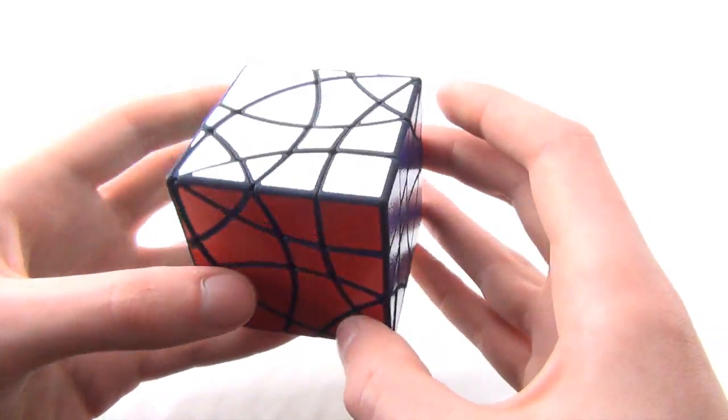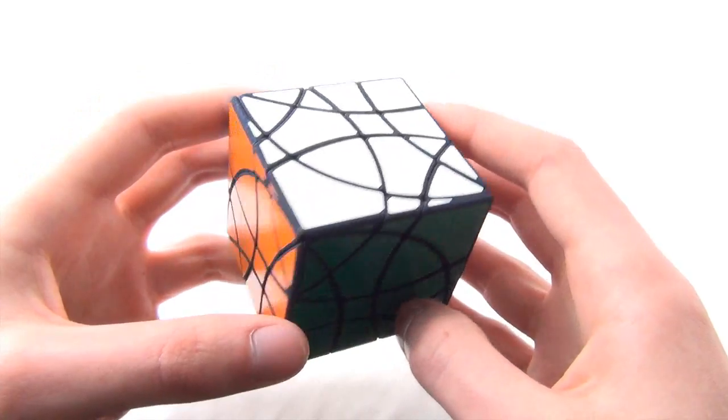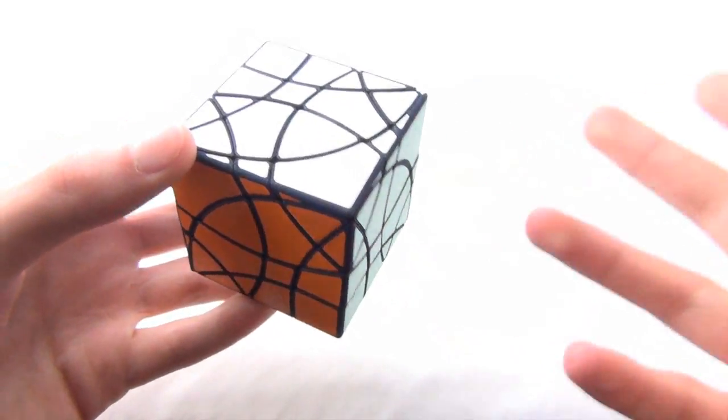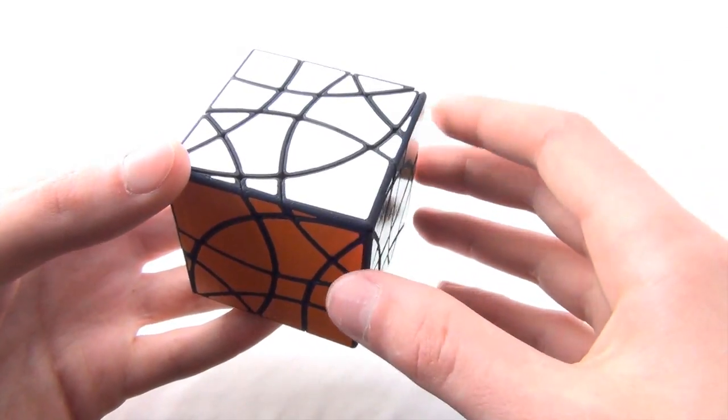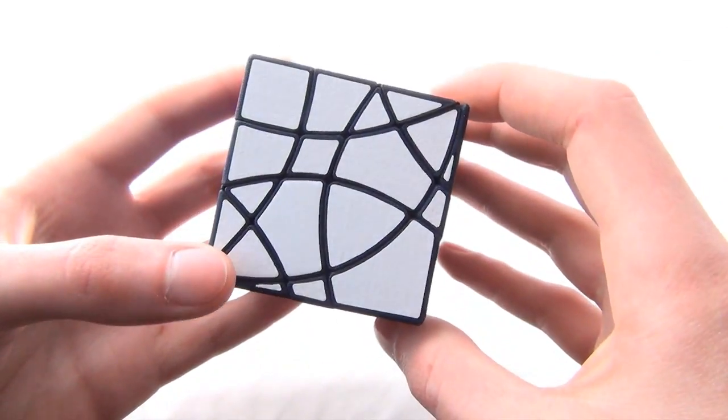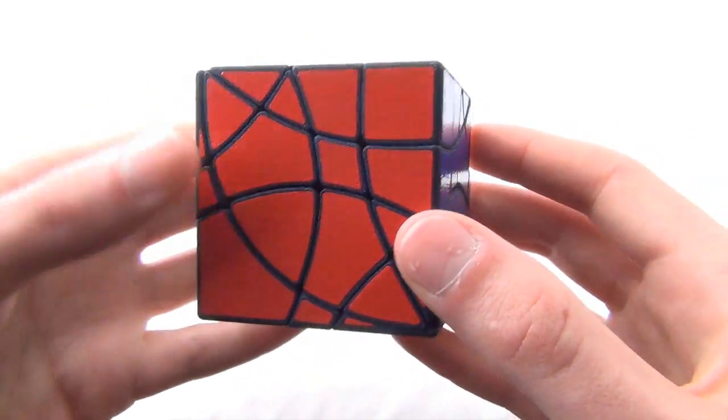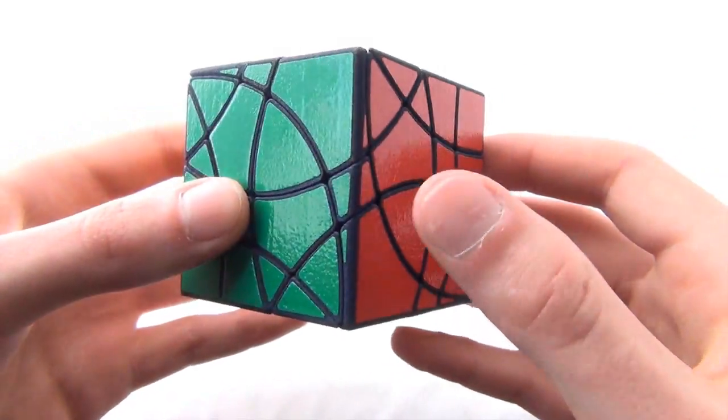The puzzle turns very well, by the way. It's been 3D printed from iMaterialize in their polyamide, which is basically the same as White Strong Flexible material. I dyed it black using RIT dye, and stickered it with these wonderful stickers from Oliver. Thank you very much for that.